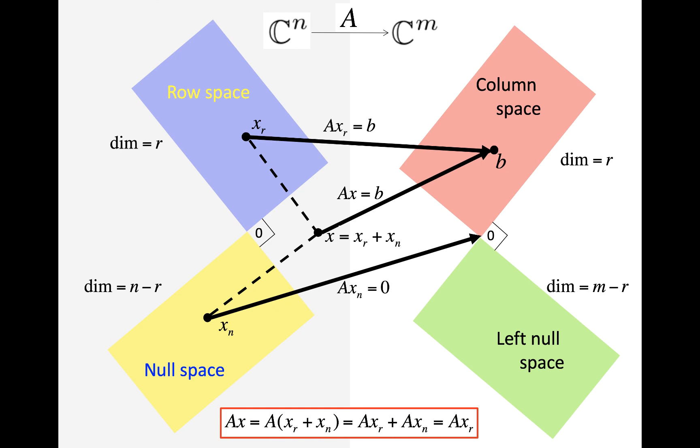And this picture captures how matrix A maps vectors from Cn to Cm, and how that relates to the four fundamental spaces.